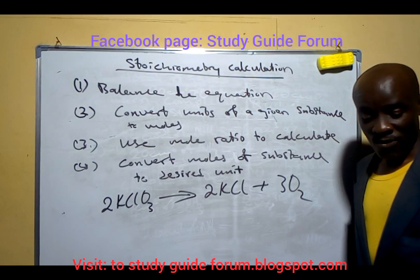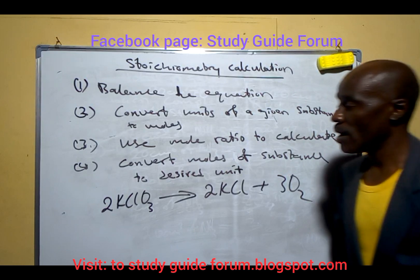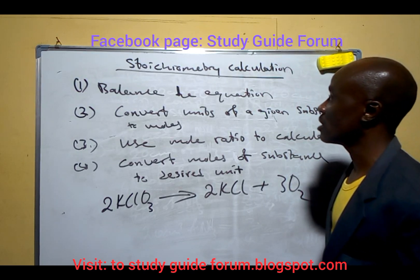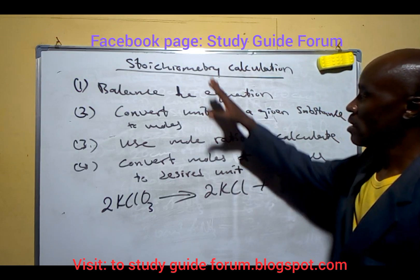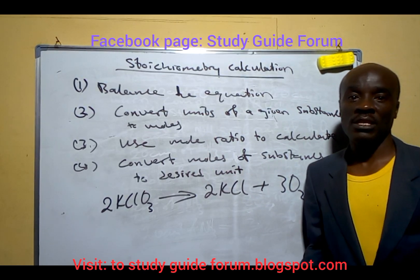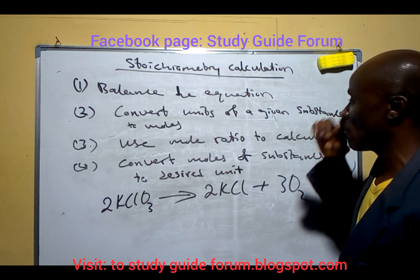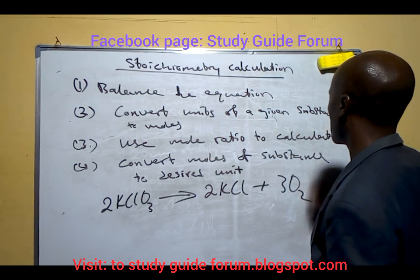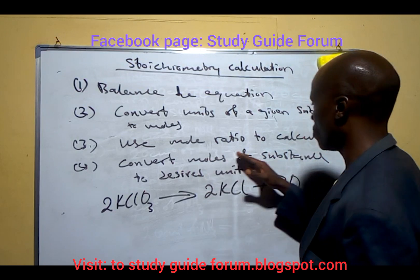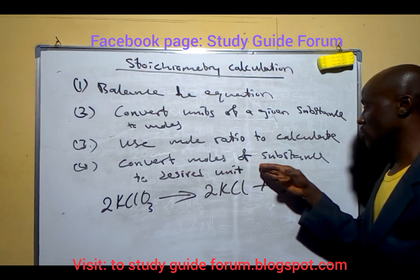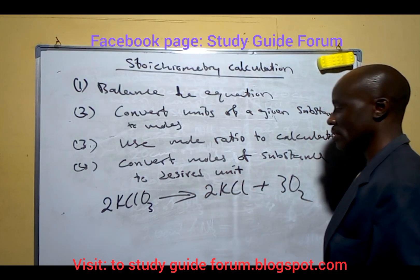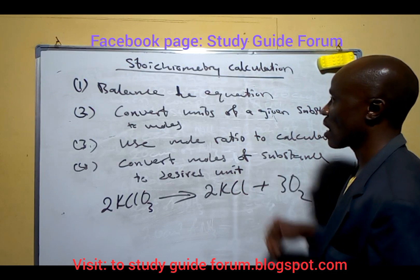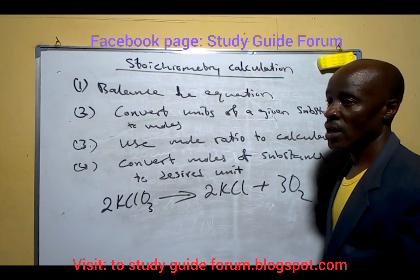Welcome everyone. We are here to look at some geometry calculations. These are the basic steps that will help you in solving a geometry calculation. First, balance the equation. Second, convert units of a given substance to moles. Then use the mole ratio. Finally, convert moles of the substance to the desired unit. Keep these in mind whenever you're solving any calculation involving stoichiometry of a reaction.